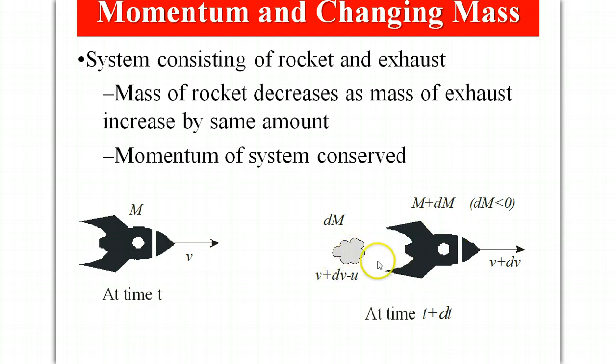The rocket is being expelled at a relative speed u to the rocket and so the speed of the gas being expelled is v plus dv minus u and we have the rocket of mass M plus dM. Again dM is negative and it's moving forward at a greater speed of v plus dv.